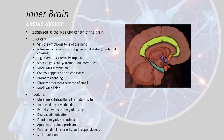The limbic system tags events as important — this is all part of the process of addiction, and also the process of learning. It stores highly charged emotional memories. It modulates all of our motivation, controls our appetite, our awakeness, our sleep cycles, our craving, our compulsion, our impulse. It promotes bonding, processes the sense of smell directly into the amygdala — the oldest sense that we have — and modulates all of our libido and sexual behavior. Almost everything associated with malfunctions of this system are the psychiatric problems we read about.